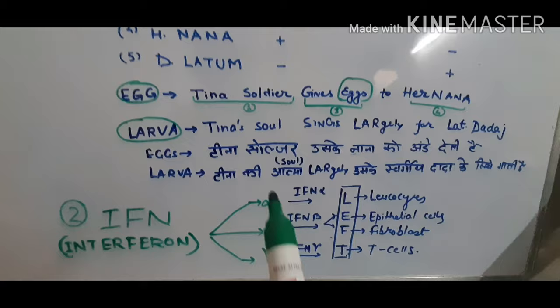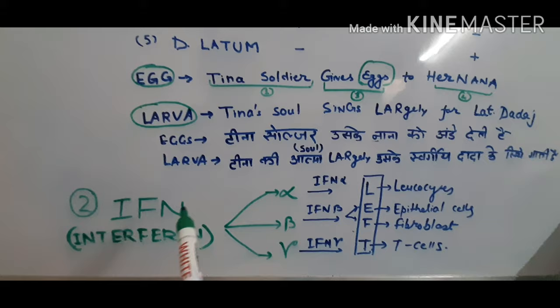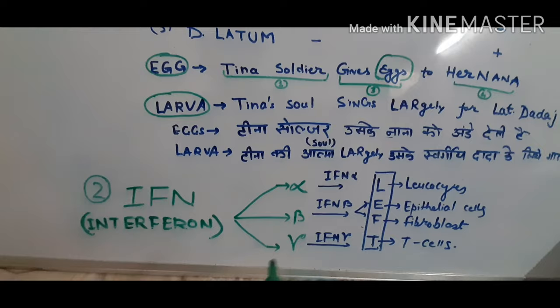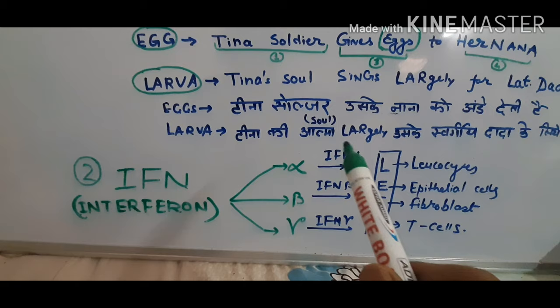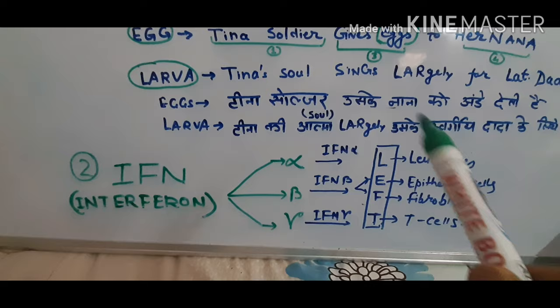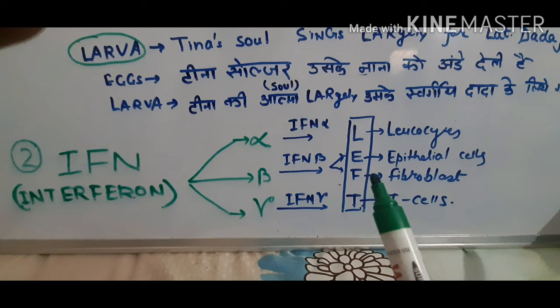Now comes the interferon part. Interferon is an antiviral protein in our immune system. They largely fight against viral infection and tumor infection. We have three types: interferon alpha, interferon beta, and interferon gamma. Interferon alpha is related to leukocytes. Interferon beta is related to epithelial cells and fibroblasts. Interferon gamma is related to T cells.